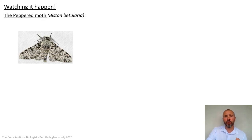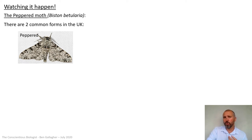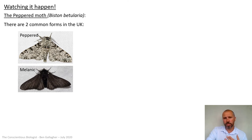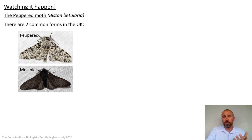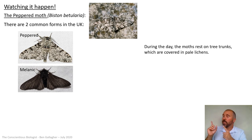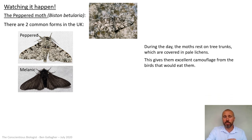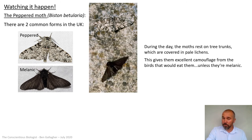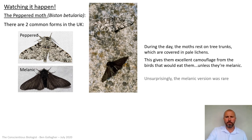Looking at the example of the peppered moth, Biston betularia — there are two common forms found in the UK: the peppered or non-melanic version, and the melanic version. Melanic because of melanin, the same pigment that makes skin browner. During the day, the moth rests on tree trunks covered in pale lichens. You can see that the non-melanic peppered version is really, really well camouflaged. That's great because if it's well camouflaged, it won't get seen and eaten by the birds that prey on them. But the melanic ones — black against a pale background — stand out and are going to get eaten. So not surprisingly, the melanic version was very rare.